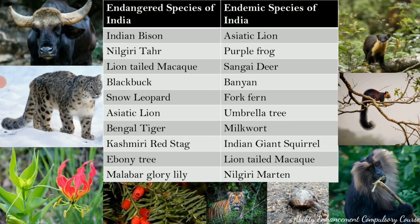We will now look at the endangered and endemic species found in India. Endangered species, as discussed, are those at a very high risk of extinction in the wild. Endemic species refers to species whose distribution is limited to a small geographic area — in this case, species limited to the Indian subcontinent. Let us look at some prominent examples.